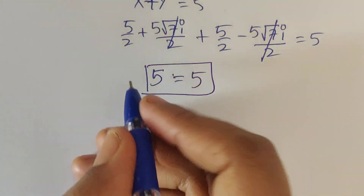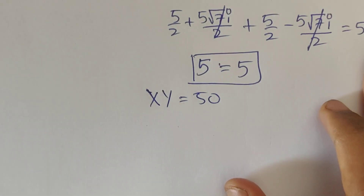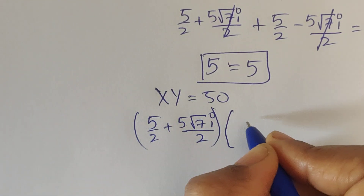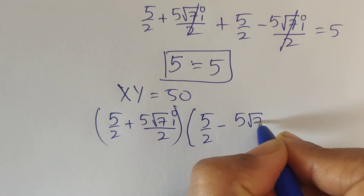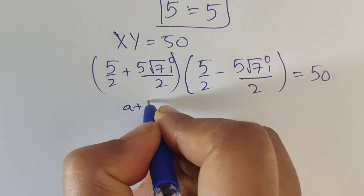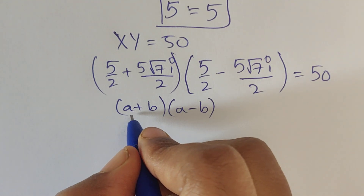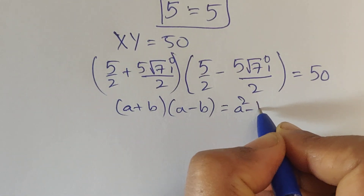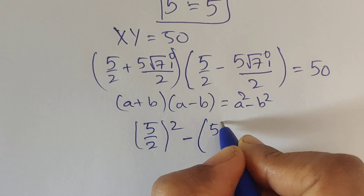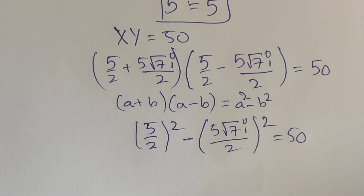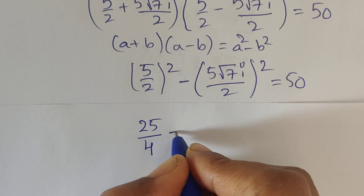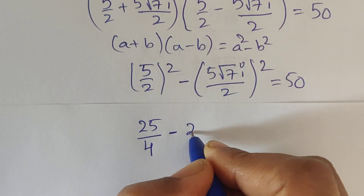Now verifying x times y equals 50. We compute (5/2 plus 5√7 i /2) times (5/2 minus 5√7 i /2). This is in the form (a plus b)(a minus b) which equals a squared minus b squared. So this equals (5/2) squared minus (5√7 i /2) squared.